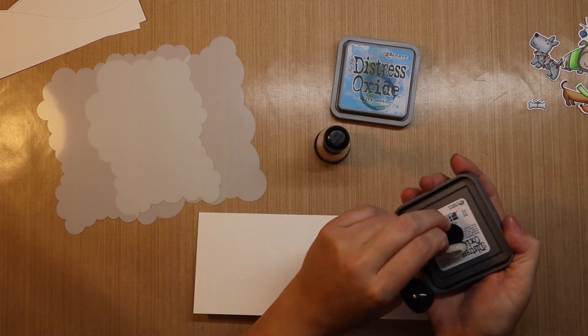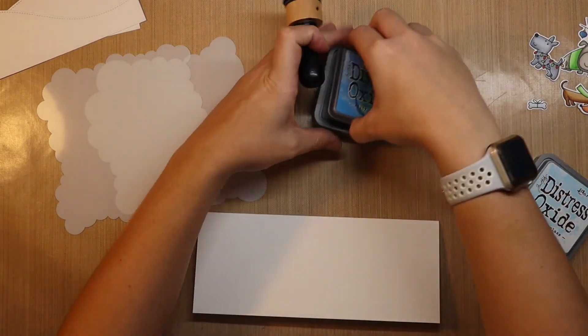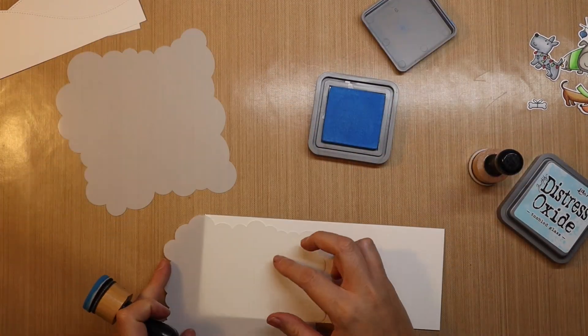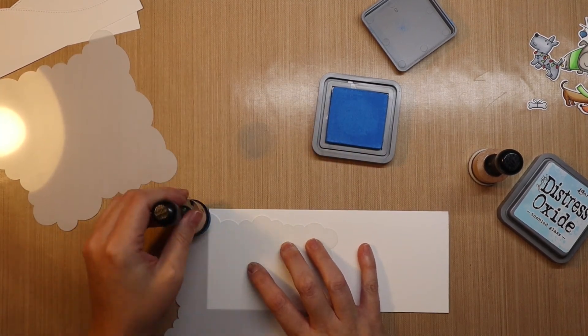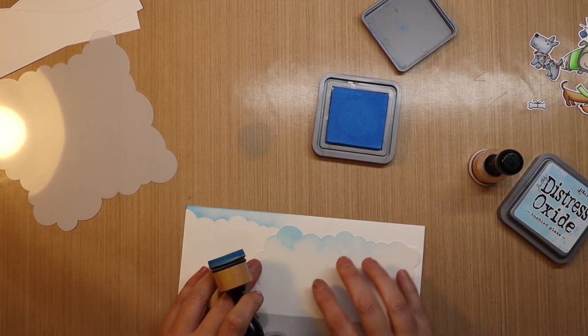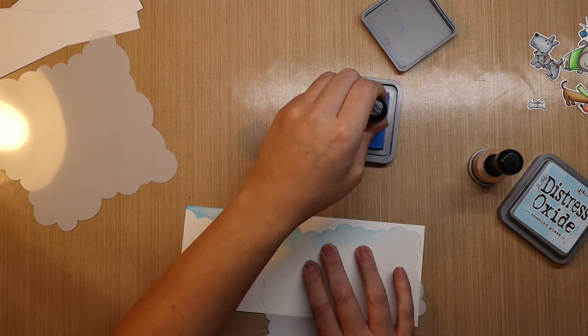My slimline card is three and a half tall by eight and a half wide. And I'm using the My Favorite Things Mini Cloud Edges stencil to ink blend some clouds into my sky here.